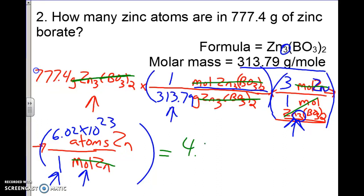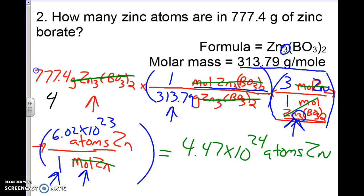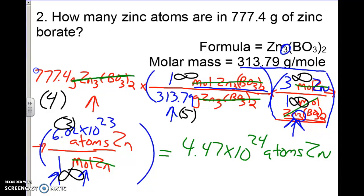We end up getting 4.47 times 10 to the 24th atoms of zinc. Let's check our sig figs. Looking at the numbers we count 3, 4, and 5 significant figures — our answer can only have 3, because your answer can only have as many significant digits as your piece of data with the fewest. Pause, look at this, think about it before you go on to the next problem.